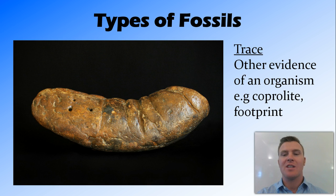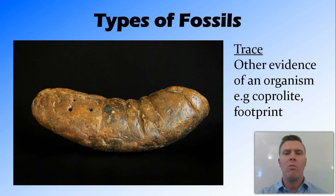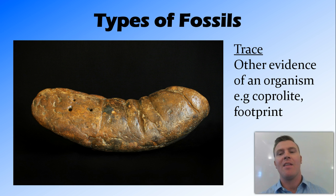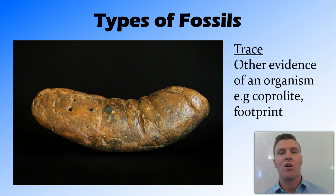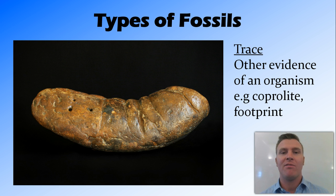Or it can be a trace fossil, which is other evidence of an organism — for example, a footprint. You're probably thinking: why does that fossil look like a big poo? Well, that's because it is. Another trace fossil is called coprolite, and it's basically fossilized feces.